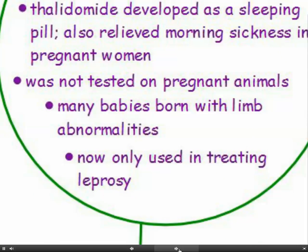The problem with thalidomide was that it hadn't been tested properly, and it hadn't been tested on pregnant animals. So there were disastrous consequences, and some of the women who had taken it during pregnancy gave birth to deformed babies — babies born with quite severe limb abnormalities. Now its use is very carefully controlled; it's only used in treating leprosy. It changed the way that drugs were tested.